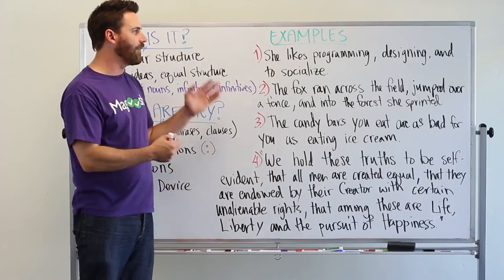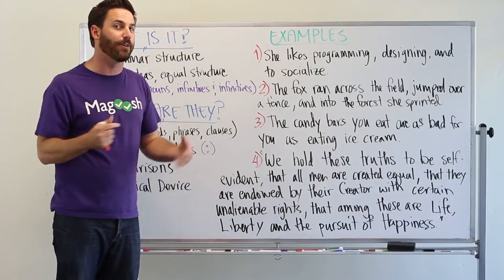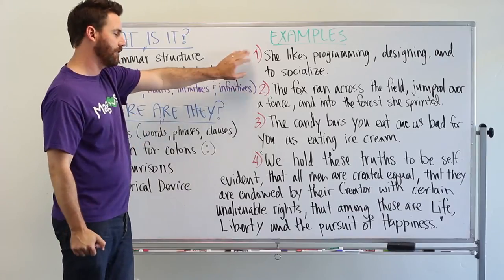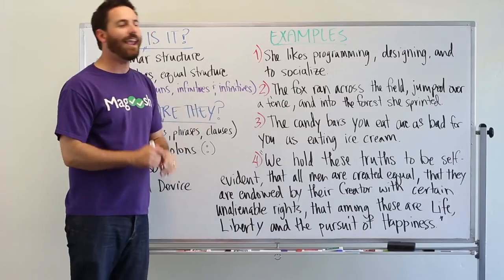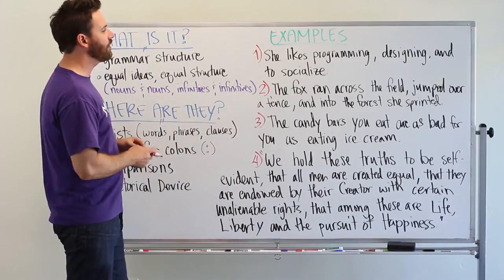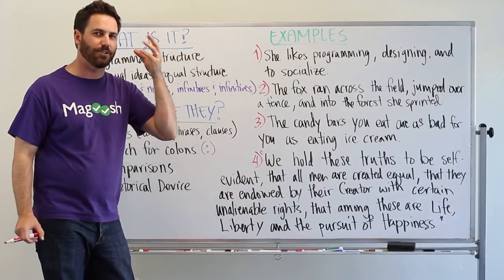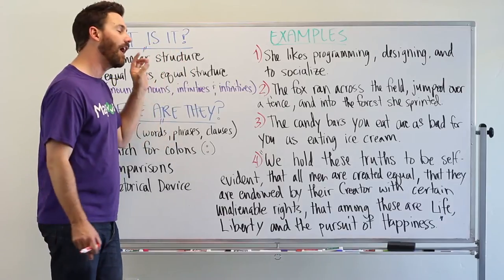Some of these examples are flawed. So we're going to fix them. Question number one, or excuse me, sentence number one. She likes programming, designing, and to socialize.